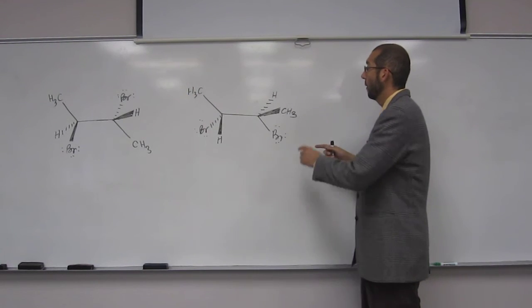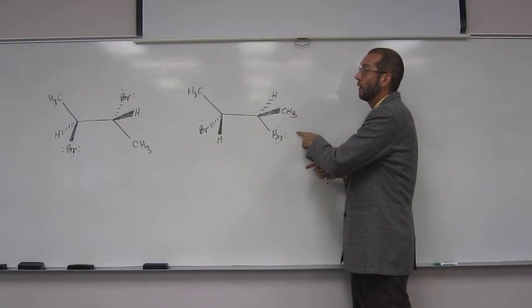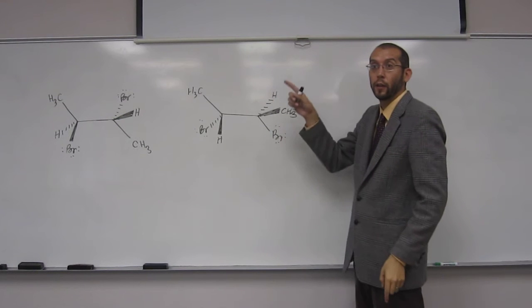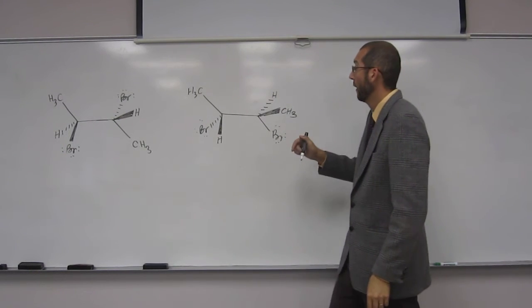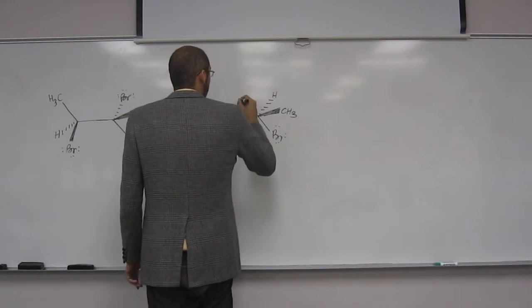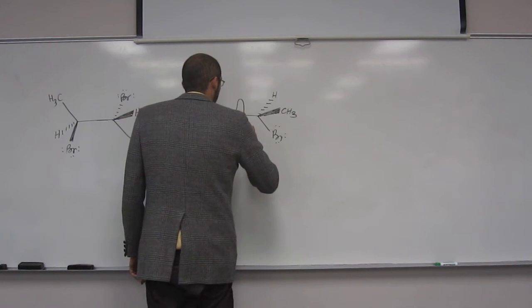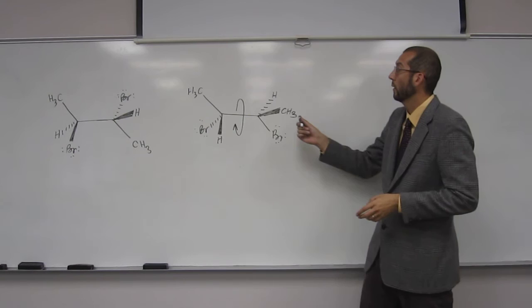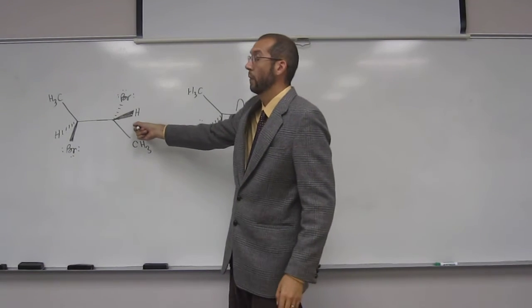So here we've got the same pattern here, right? So bromine, then hydrogen, then methyl in a counterclockwise pattern. Do you see that? So if we rotate this, like that, counterclockwise, we should be able to get it to this form here.